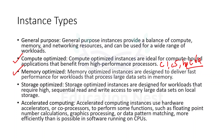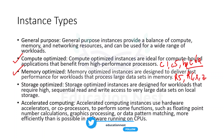Memory optimized instances are designed to deliver fast performance for workloads that process large data sets in memory. Use cases include hosting databases, caching with Memcache or Redis, and real-time processing of unstructured data with Hadoop or Spark clusters. Instances starting with 'R' like R5 or R6, and those starting with 'X', 'X1', or 'Z' fall under memory optimized.